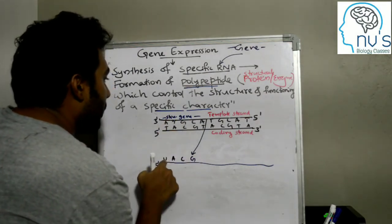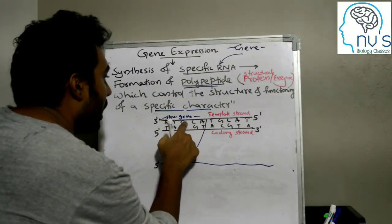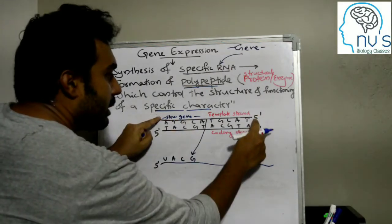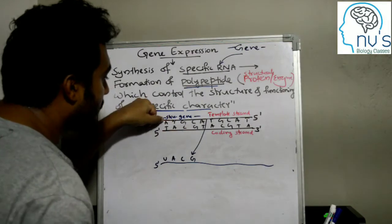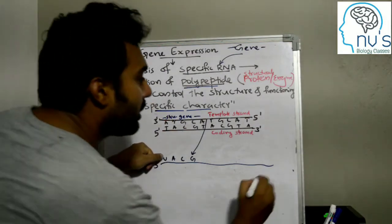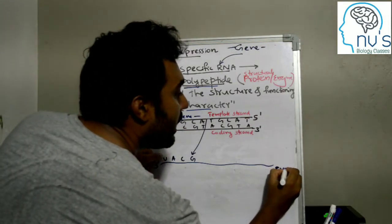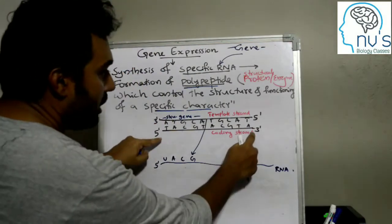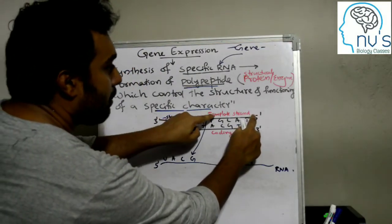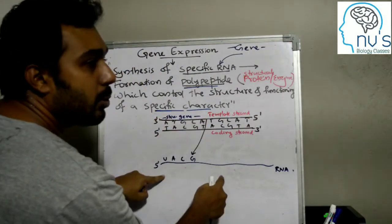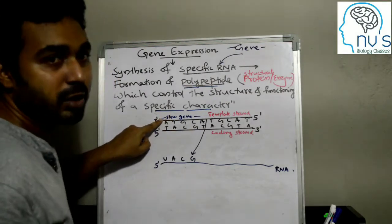Adenin pairs with uracil. Thymin pairs with adenin. Guanin pairs with cytosin. I am going to study this strand in RNA. Then there is one strand — it is a template strand. It is a piece of RNA, the structural gene.